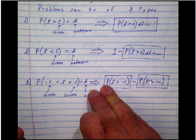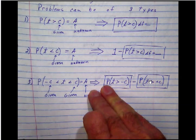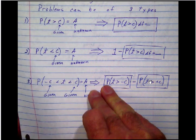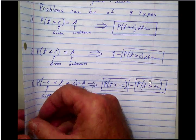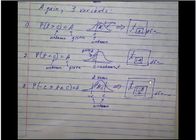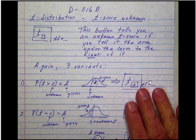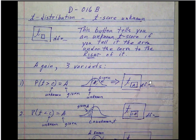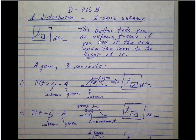I'll also quickly show you the situation where you have the area, but you want the unknown t-score. For that, you're going to use the t-button. This button tells you the unknown t-score if you tell it the area under the curve to the right of it. Again, you will have to have this degree of freedom each time.